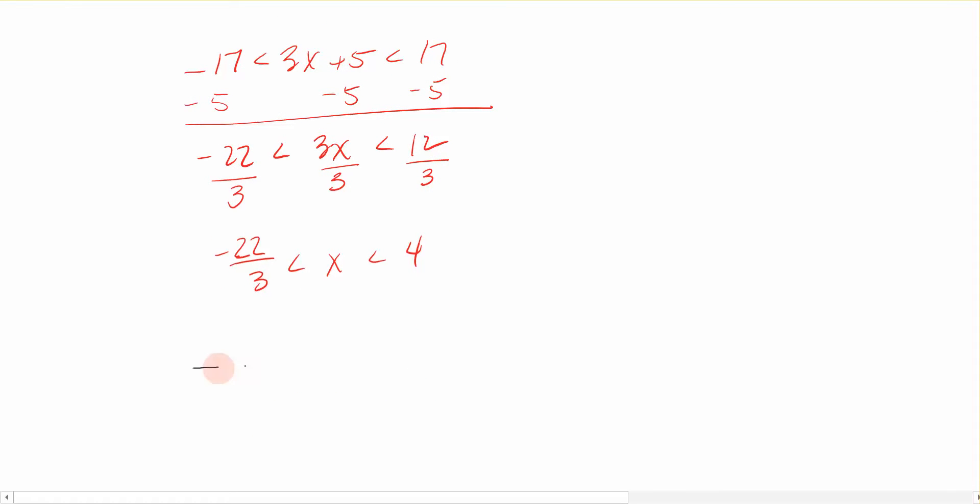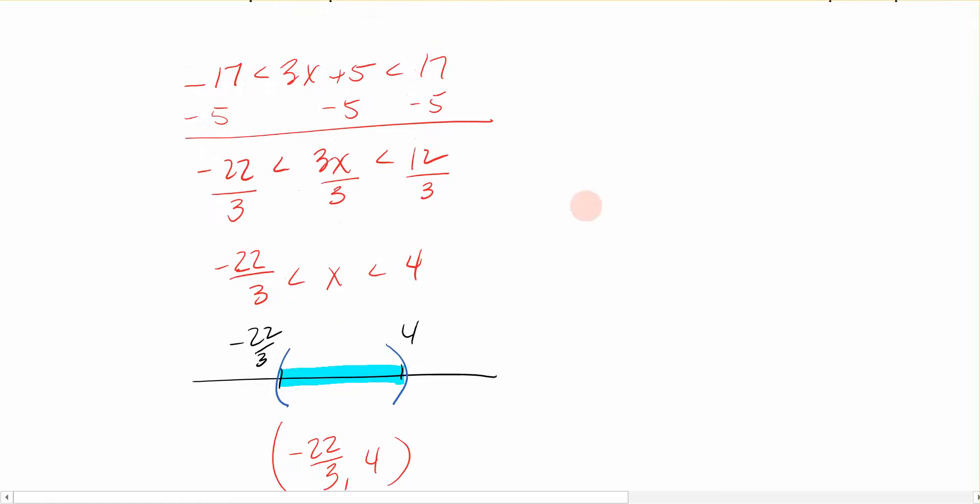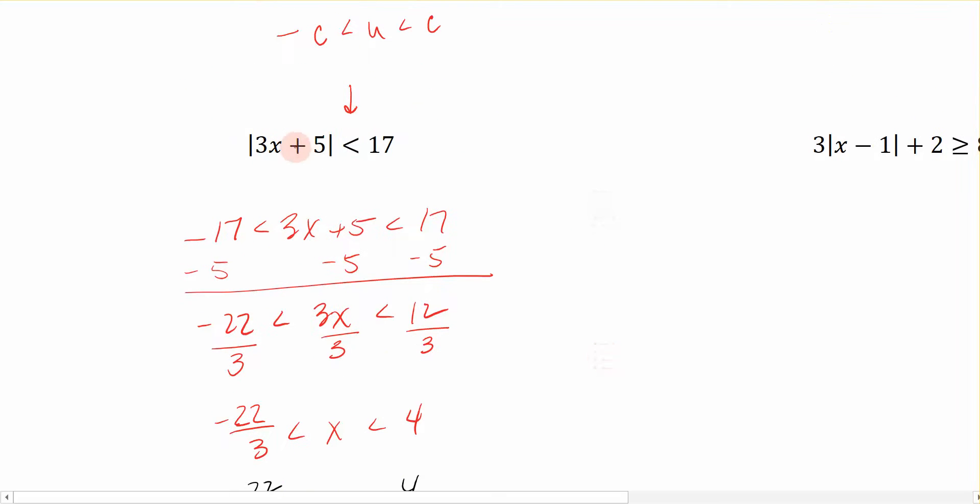graph the solution, by putting the two numbers, negative 22 thirds and 4. We're going to shade in in between, and then we need parentheses on either end because of this symbol right here. So to write the solution in interval notation, it's negative 22 thirds comma 4 with parentheses. That's one scenario, that's when the absolute value is less than a constant.